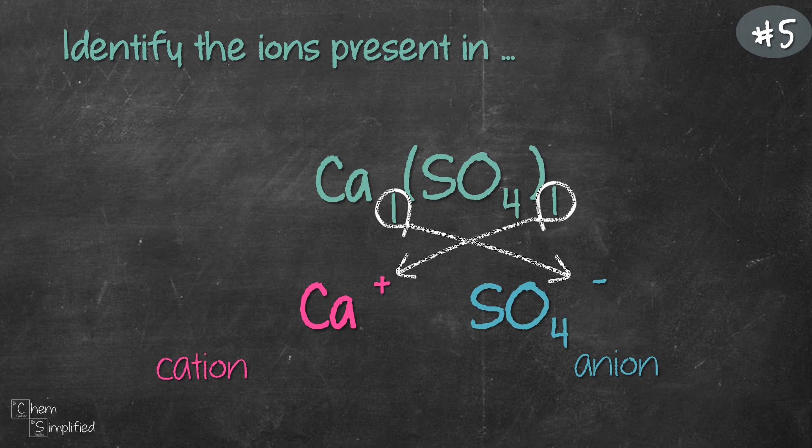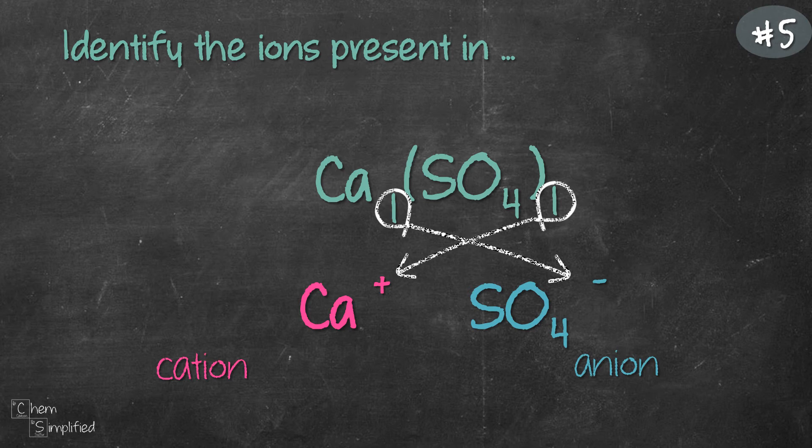Remember that we always refer back to the periodic table. So let's look at the periodic table and find where Ca is. So Ca happens to be in group 2. So group 2 metals are going to form +2 ions. So that means the charge for Ca is actually 2+.